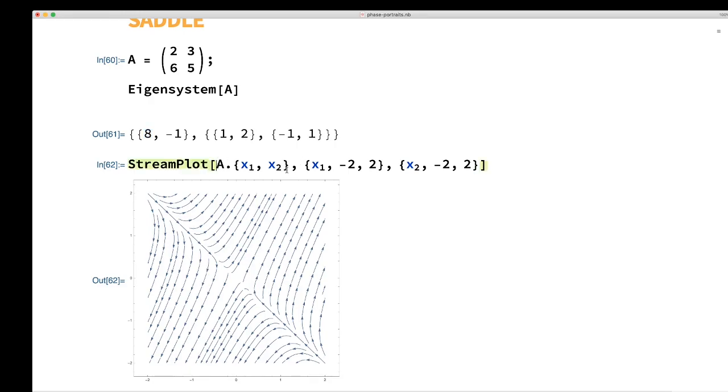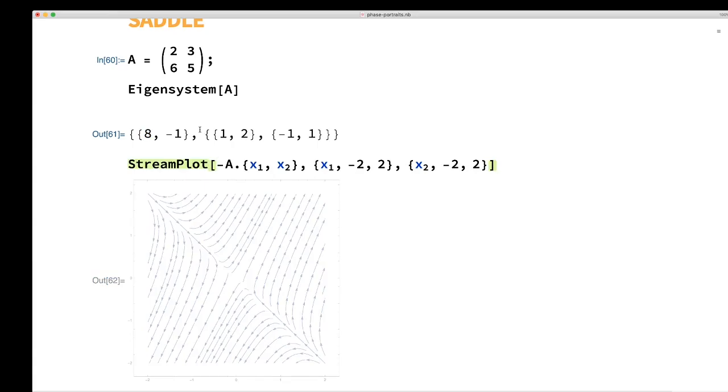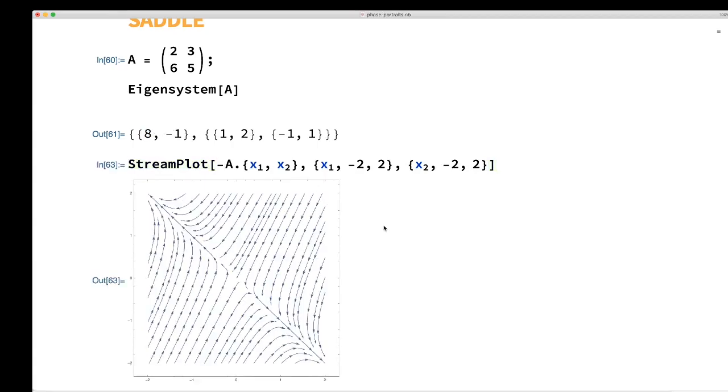In this case, if I negate A, then I just switch the role of the positive and the negative. So now, what was formerly the stable direction becomes the unstable direction, or the primary unstable direction. And then everybody tends to curl into that direction, positive or negative.